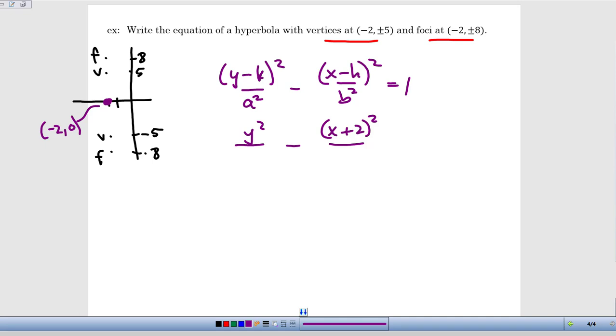So now we need to figure out what our values of a and b are. So recall that a is the distance from the center to the vertices. So right here from center to vertex, from center to vertex, that distance is 5, so that's our a. So that means a equals 5, so I can go ahead and plug that in here, so I've got y² over 25.